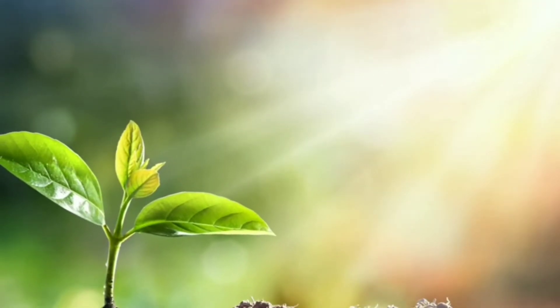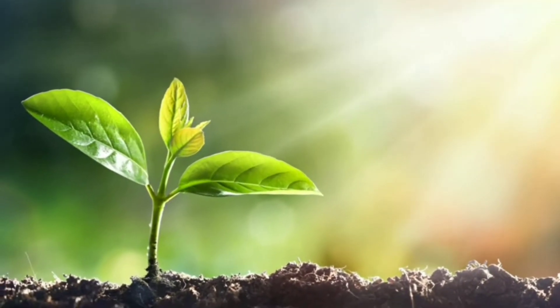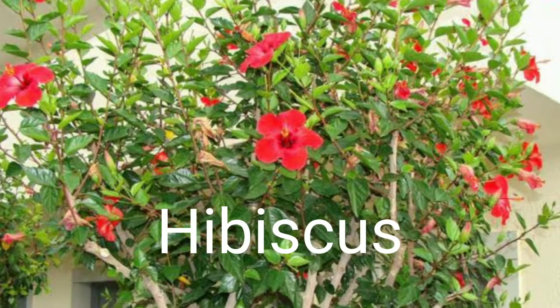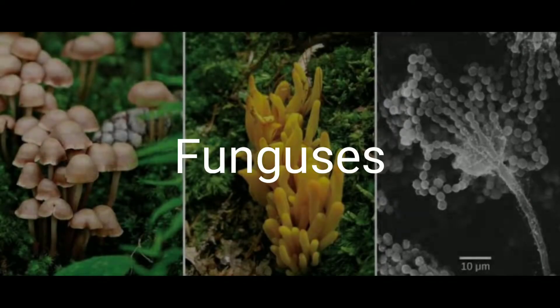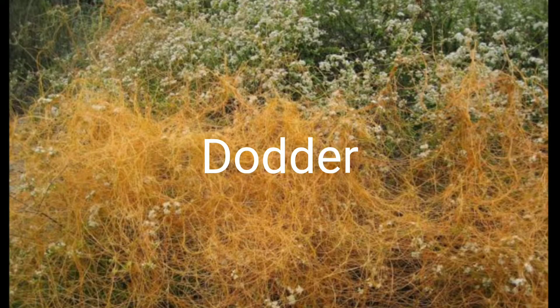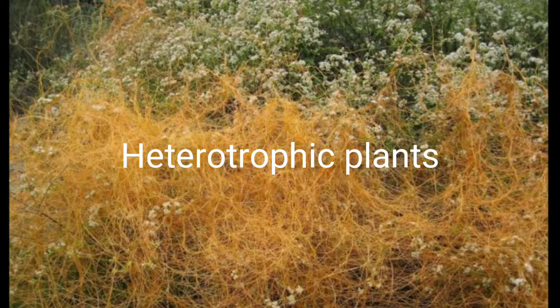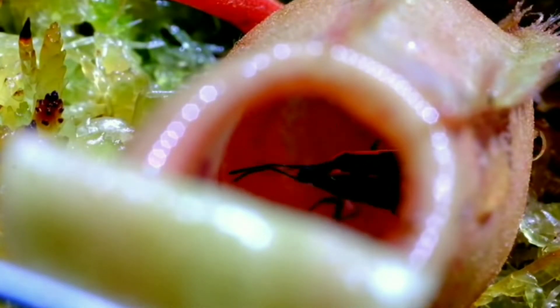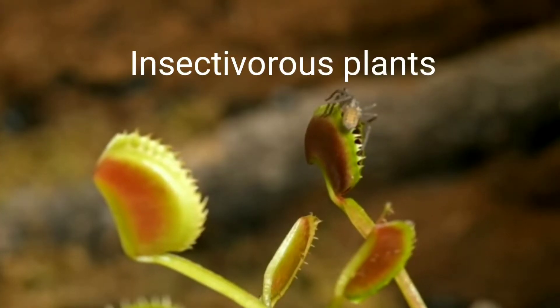Plants make their own food in sunlight. Such plants are called autotrophic plants — for example, the hibiscus. Some plants like funguses, loranthus, and dodder use other plants for food and are said to be heterotrophic. Plants like the pitcher plant even consume insects; they are insectivorous.